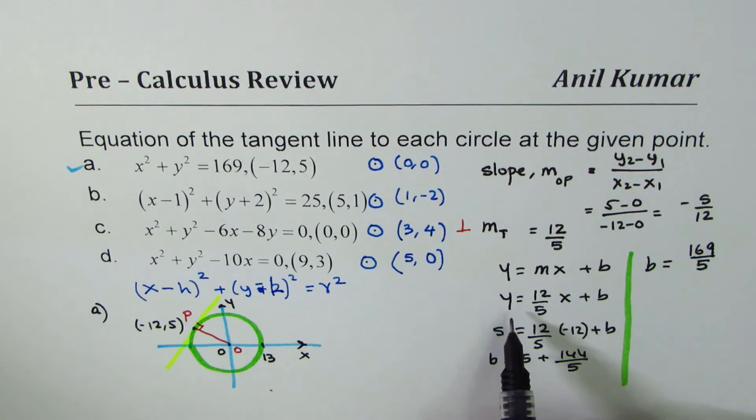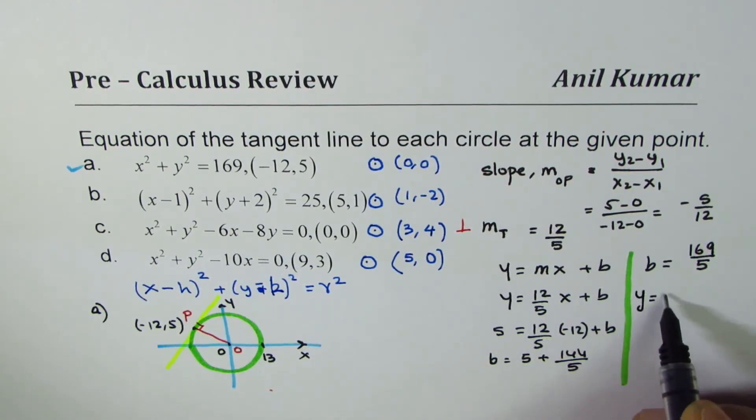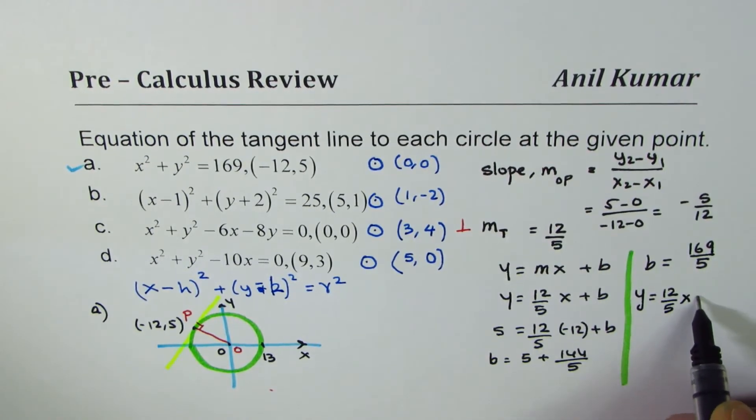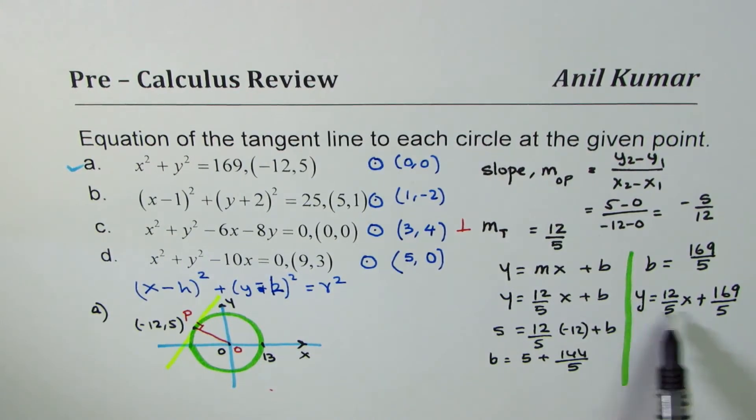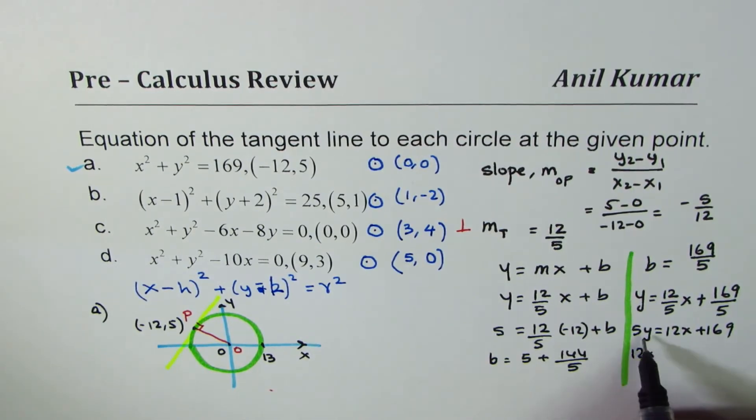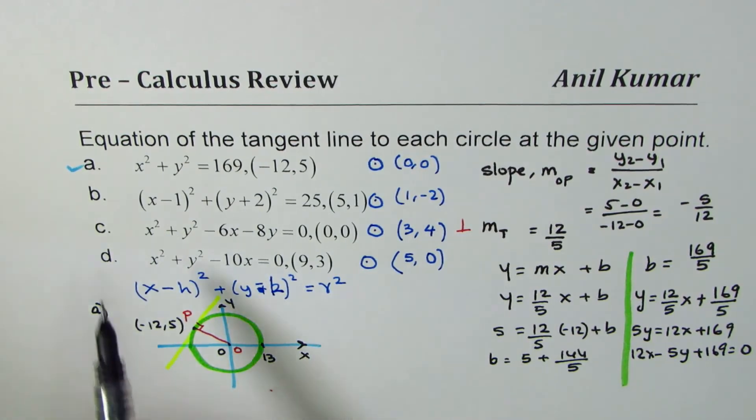If b value is this, in that case, equation of the line will be y = (12/5)x + 169/5. At times, you may be required to write in standard form. You can multiply all by 5 and write the equation. That is one of your answers, but if required in standard form, you could write like this: 5y = 12x + 169. Rearrange, so we get 12x - 5y + 169 = 0. So that becomes the equation of tangent line for part a.